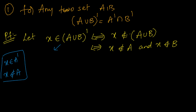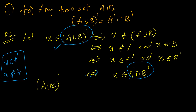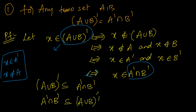So x does not belong to A means x should be in A complement, and x does not belong to B means x should be in B complement. Therefore x belongs to A complement intersection B complement. Since these are if-and-only-if statements, (A union B) complement is a subset of A complement intersection B complement, and vice versa. Hence (A union B) complement = A complement intersection B complement.